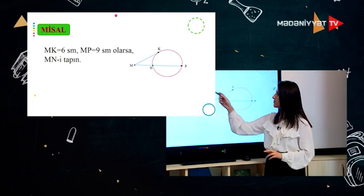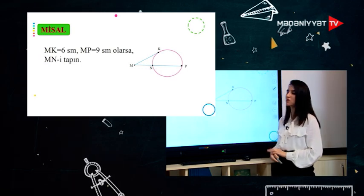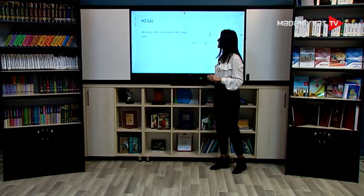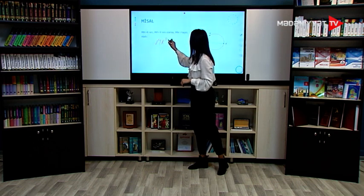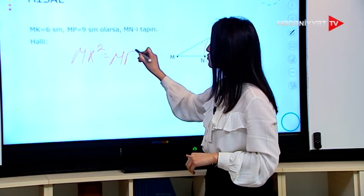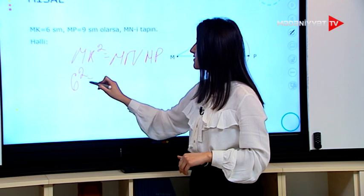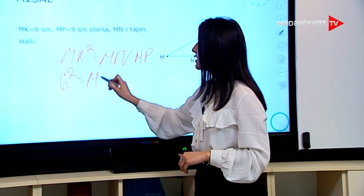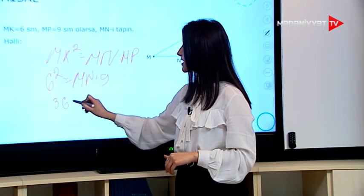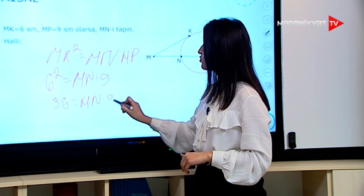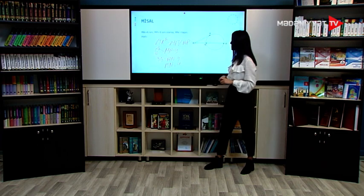Nümunəmizə baxaq: MK = 6 cm, MP = 9 cm olarsa, MN-i tapın. Bizdə MK toxunandır, MP isə kəsəndir. Deməli, düsturumuza əsasən yazacağıq: MK-nın kvadratı bərabərdir MN vurulsun MP-yə. MK = 6-dır, 6-nın kvadratı bərabər olacaq MN vurulsun 9 cm-ə. 36 bərabər olacaq MN vurulsun 9. Biz buradan alırıq ki, MN bərabərdir 36 bölünsün 9, yəni 4 cm.